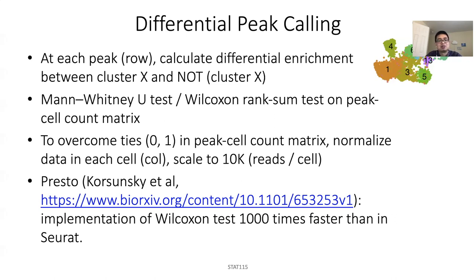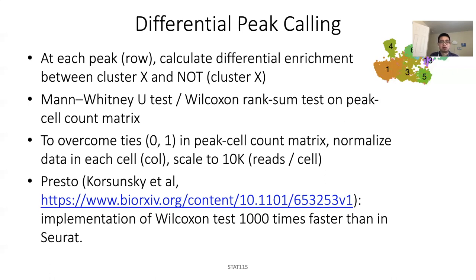There's a tool called Presto that implements a fast Wilcoxon test, which is 10,000 times faster than in Seurat. For single-cell RNA-seq you have around 20,000 rows, but for single-cell ATAC-seq you can easily get 300k rows. If you've used Seurat's FindMarkers function, it can take a very long time, so for single-cell ATAC-seq you might want to use Presto — it can get you results in maybe 20 seconds instead of hours.